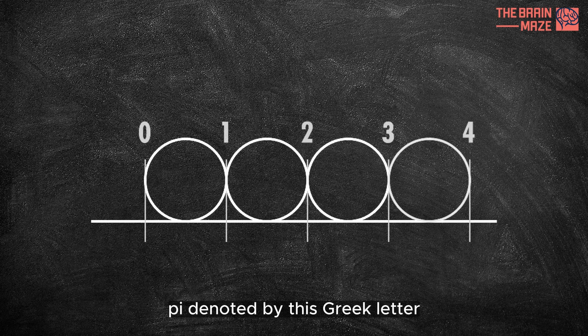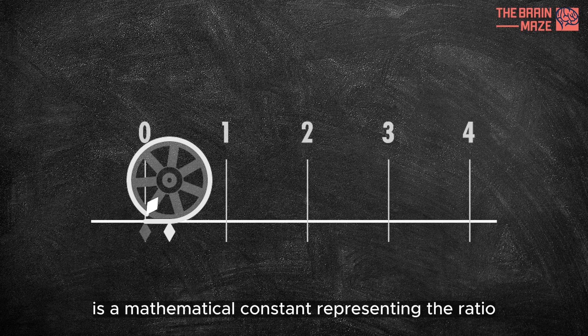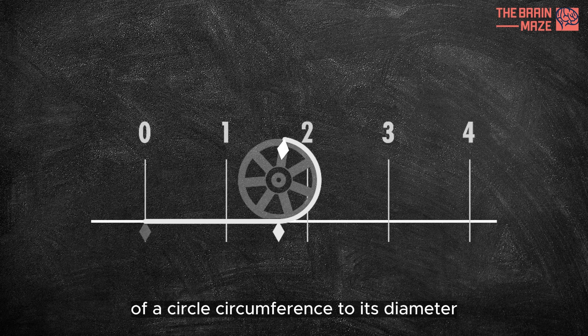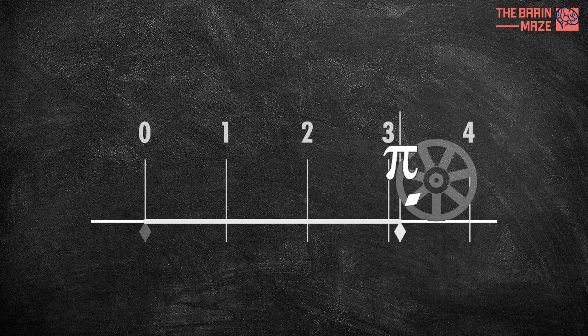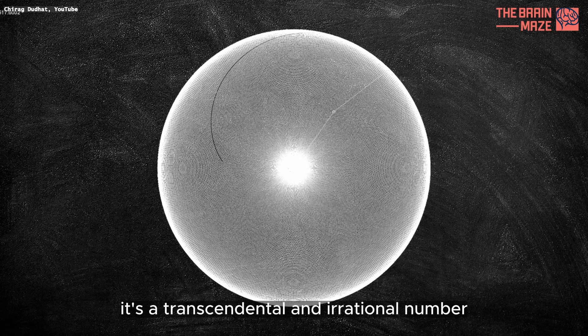Pi, denoted by this Greek letter, is a mathematical constant representing the ratio of a circle's circumference to its diameter. It's a transcendental and irrational number,